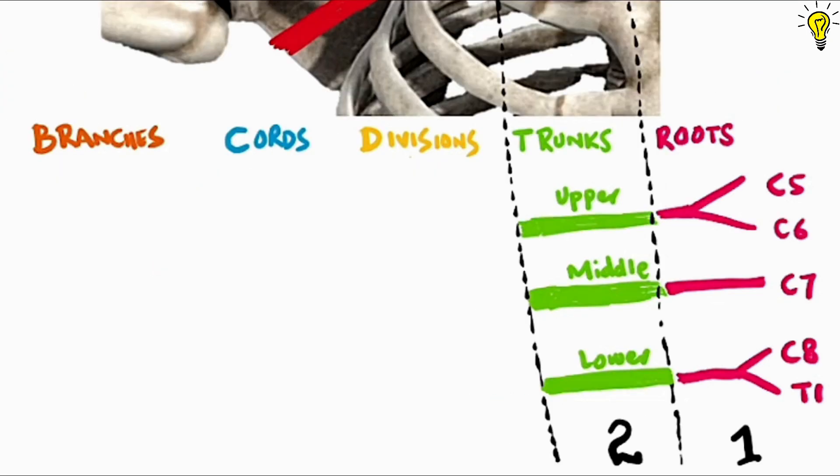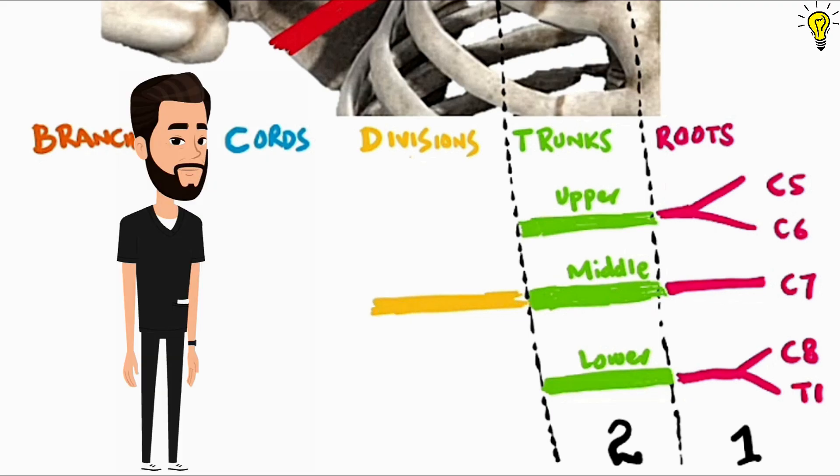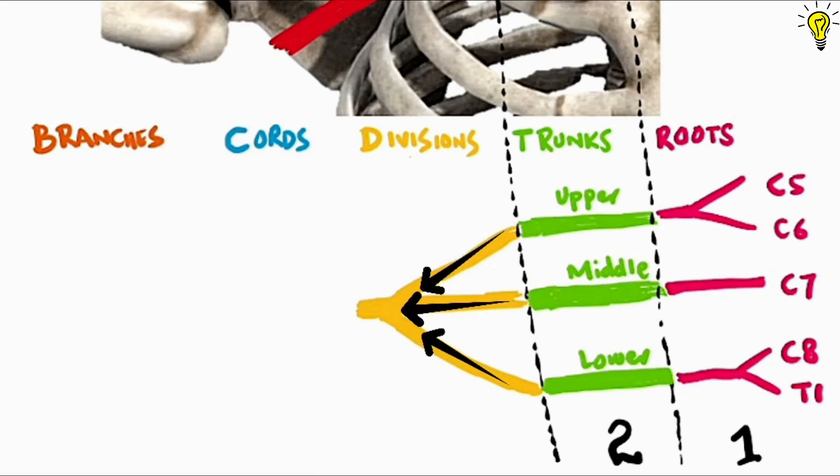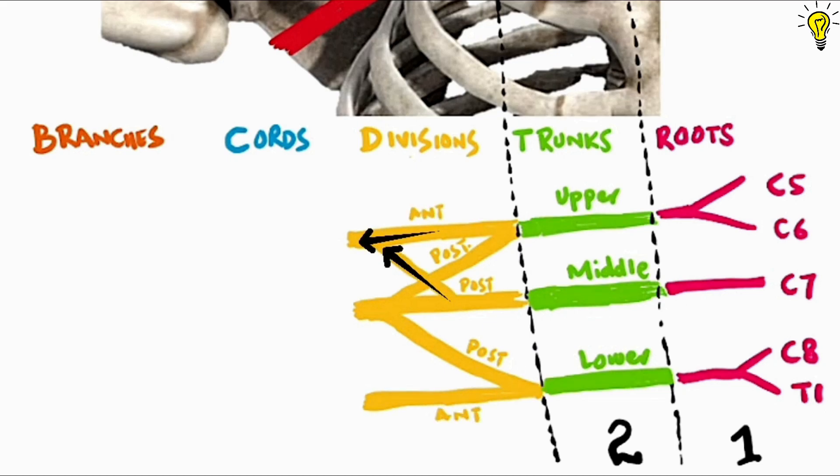So five roots, three trunks so far. Next up, divisions. Now each trunk from zone 2 divides into anterior and posterior divisions. The posterior divisions of all three trunks combine naturally posteriorly to form the posterior cord. The anterior division of upper and middle trunk combine to form further the lateral cord.